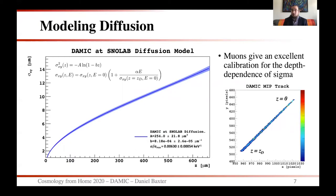When modeling diffusion, we take our reconstructed sigma parameter and map it onto the true depth of an event in the detector. For calibration, we use muons, which provide an excellent depth-dependent calibration because they travel in a straight path through the detector. A muon entering the front of the detector at z=0 shows very small lateral spread of charges on the pixel array, and as it exits the back, the spread is much larger. This straight path directly calibrates diffusion as a function of depth, giving us a functional form we can fit and apply to our data.